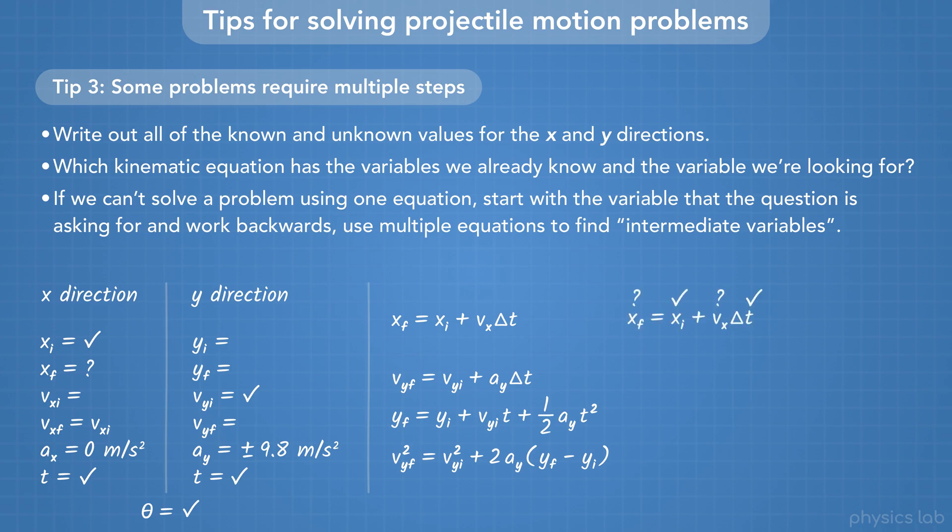If we look at the equations, the first one is the only equation that has that variable. Let's say we know the initial X position and the time, but we don't know the X velocity, so we need to find that first. Maybe we can use a trig relationship, because we know the initial angle, theta.